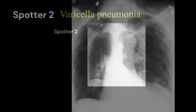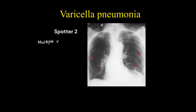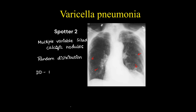In this case, we can see multiple variable-sized calcified nodules in random distribution. This was a case of varicella pneumonia, which is also one of the differential diagnoses for miliary nodules. The other differentials for these cases are the ones that present as miliary nodules.